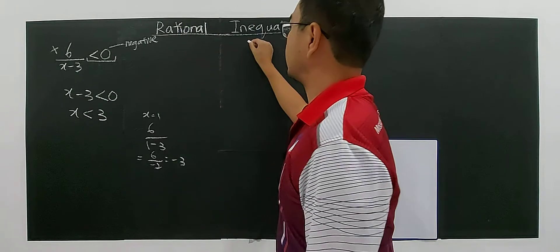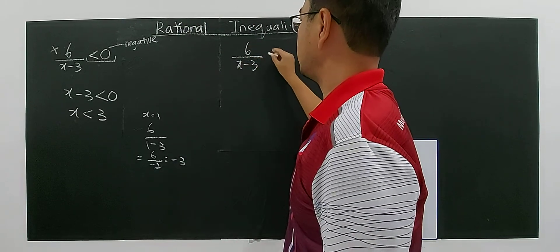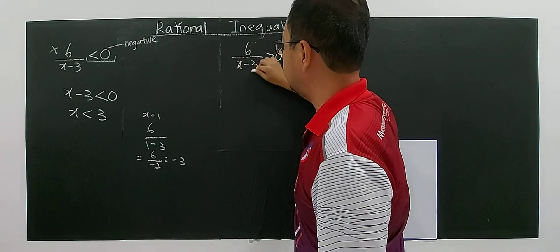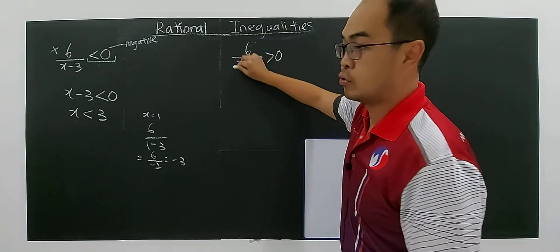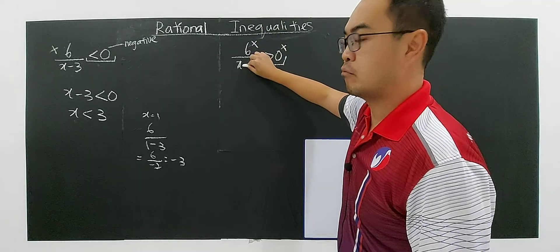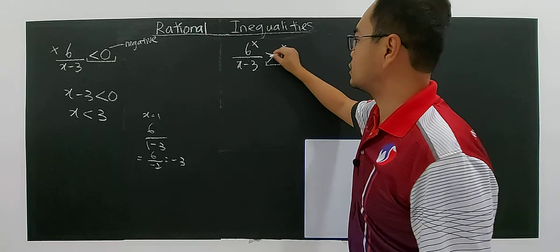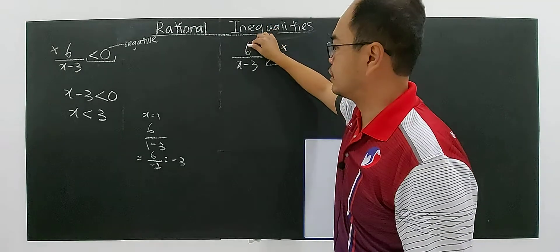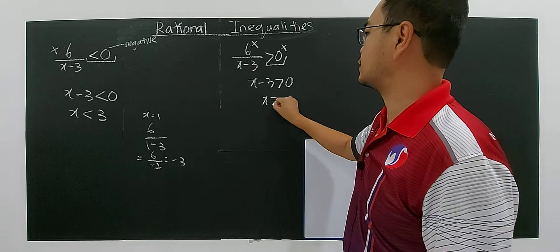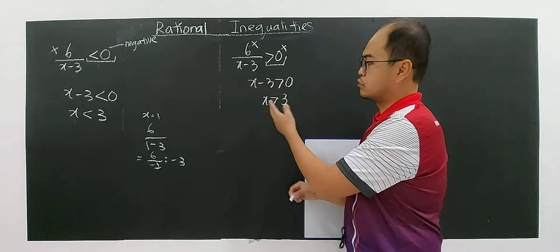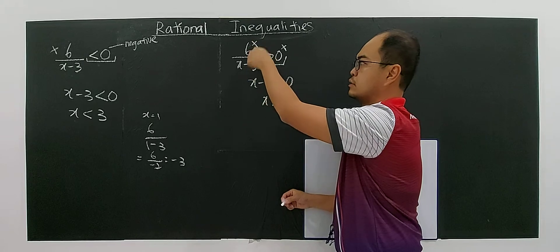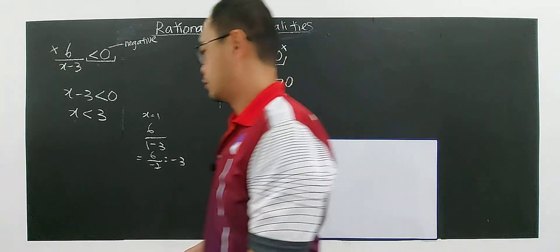You may not understand yet, so now consider: if 6 over x minus 3 is greater than 0 — positive — when you divide 6 by some unknown and get a positive result, since 6 is positive, the denominator x minus 3 must also be positive. So x more than 3. If you choose any number more than 3, say 4: 4 minus 3 is 1, and 6 over 1 is 6, which is greater than 0. That's how you analyze it.